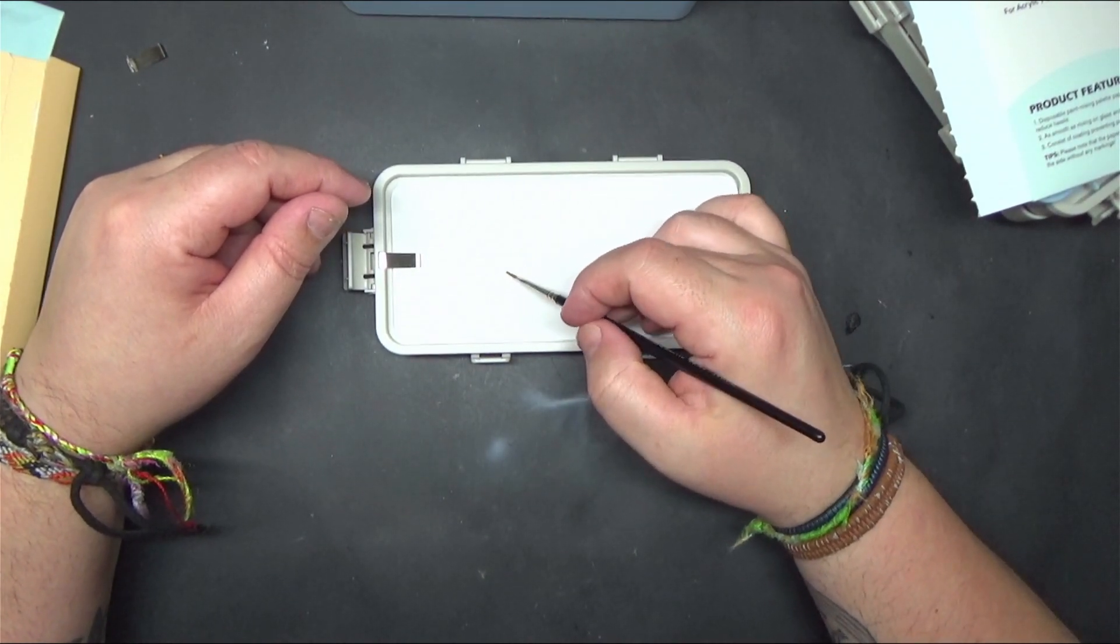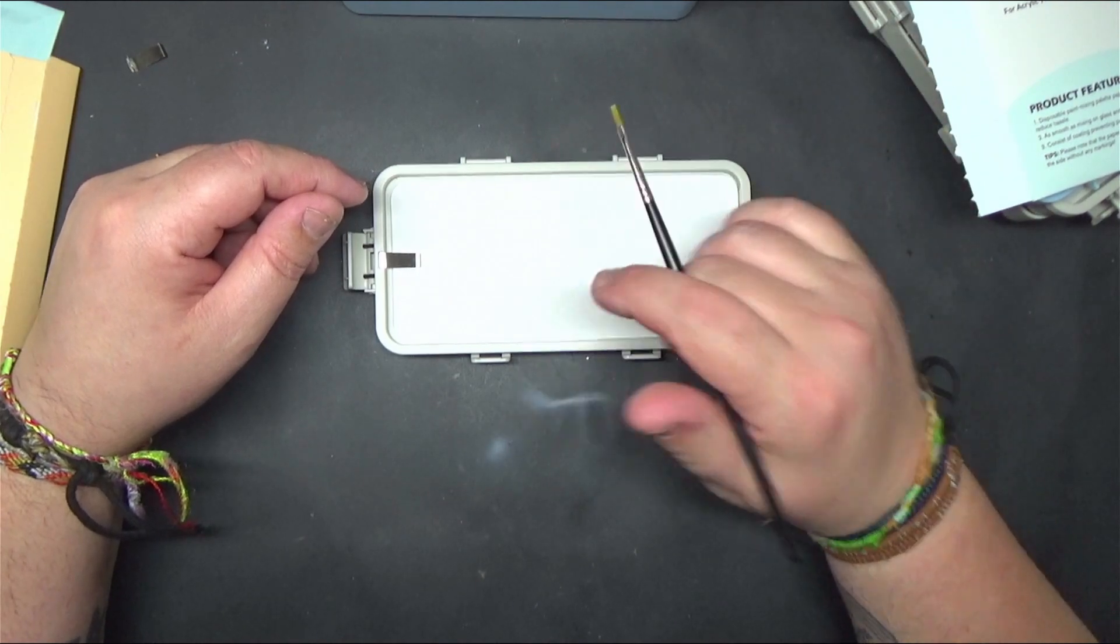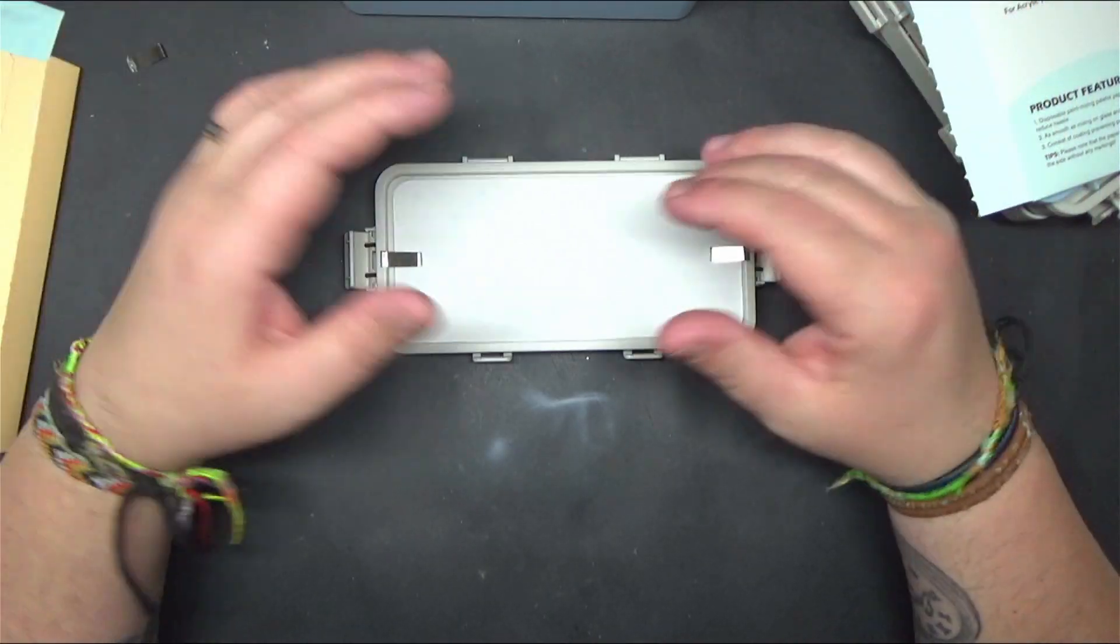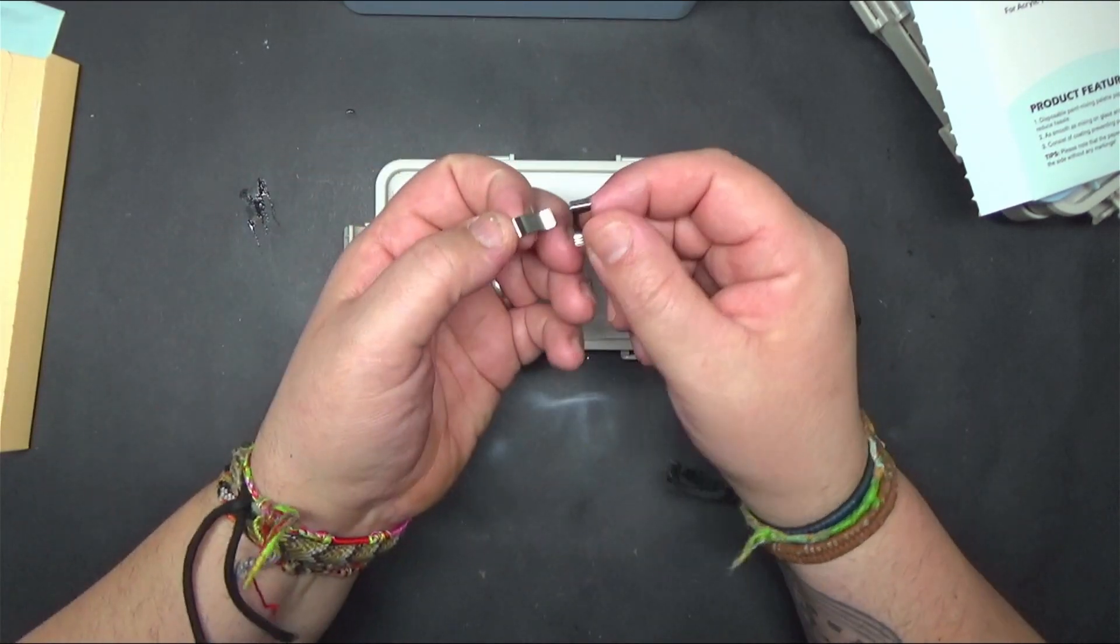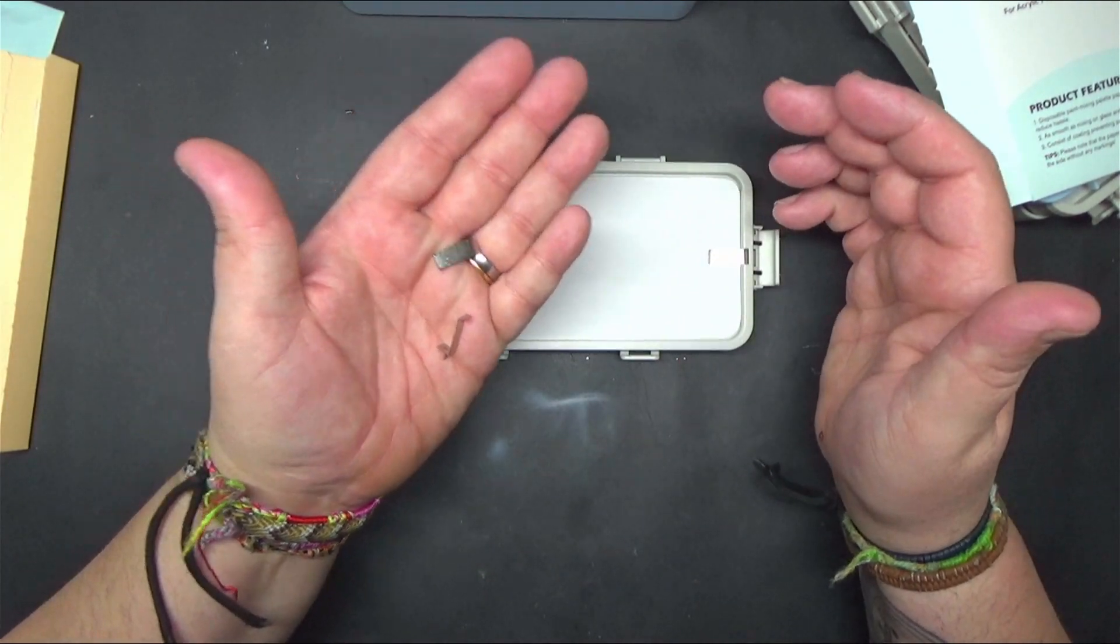When you finish just remove the paper, chuck it in the bin. You have two spare clips just in case one of these breaks.